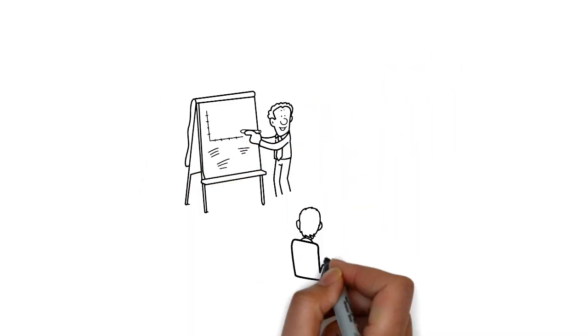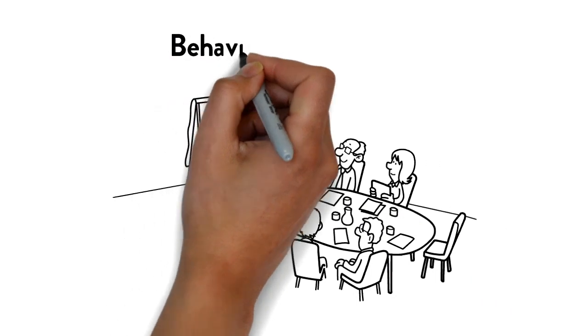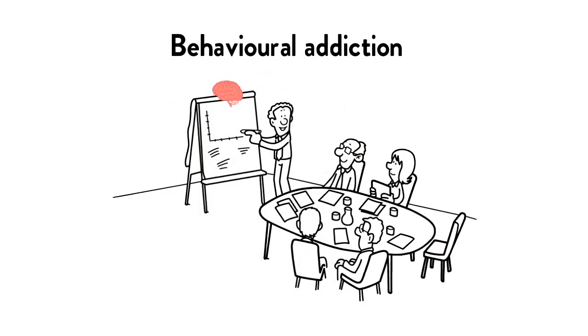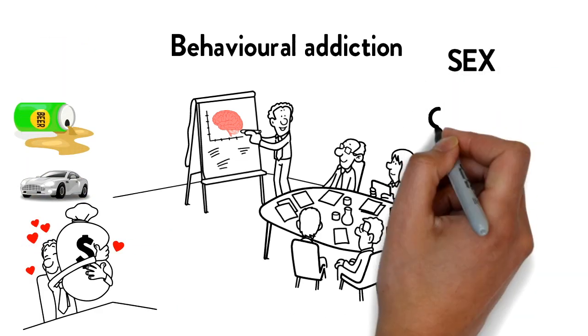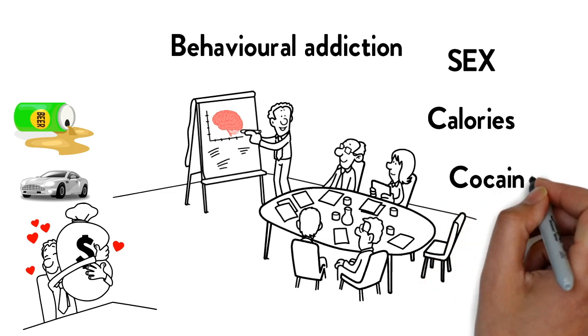It started with discussions around behavioural addiction and the idea that people can get addicted to changes in brain chemistry. People can get addicted to drink, cars, money, sex, calories, cocaine and so on.